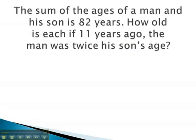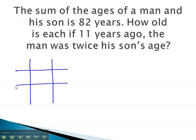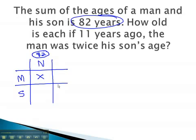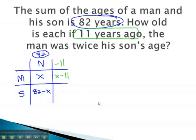In this first problem, we see that we are comparing the ages of a man and his son. Right now, we're told the sum of their ages is 82 years. We don't know how old the man is, so we make that x. The son becomes the subtraction problem: 82 minus x. The next column we fill in by the change in time — 11 years ago. Subtracting 11 from each cell gives us x minus 11, and 82 minus 11 is 71 minus x.